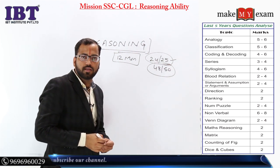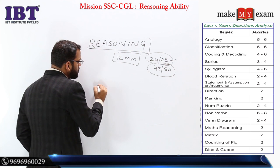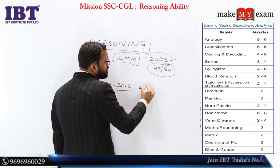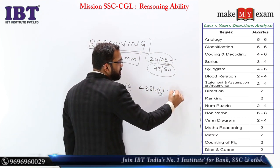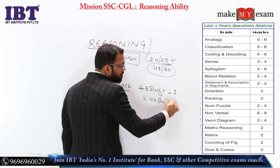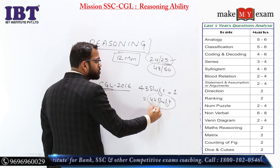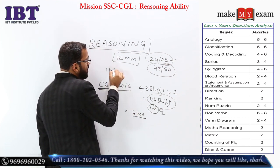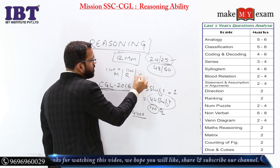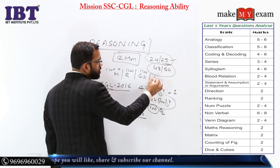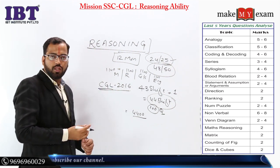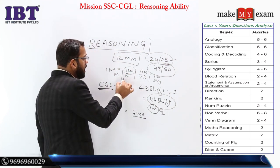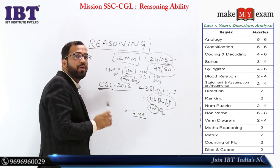अब कैसे पढ़ेंगे, tricks कैसे करेंगे। Last CGL 2016 में 43 shifts हुई, एक shift cancel होके कुल 44 shifts हुईं। एक shift में 100 questions थे, तो total 4400 questions हुए - जिसमें maths के 1100, reasoning के 1100, GK के 1100, और English के 1100। इतने सारे new questions generate करना impossible है। That means इन 1100 questions में से 700 से 800 questions ऐसे थे जो previous years के repeated थे।